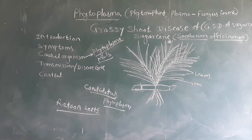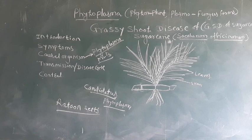Seed treatment with 500 ppm solution of oxytetracycline before planting is recommended. Oxytetracycline is an antibiotic, and this 500 ppm oxytetracycline antibiotic seed treatment should be applied before planting. In this way, grassy shoot disease of sugarcane can be controlled.